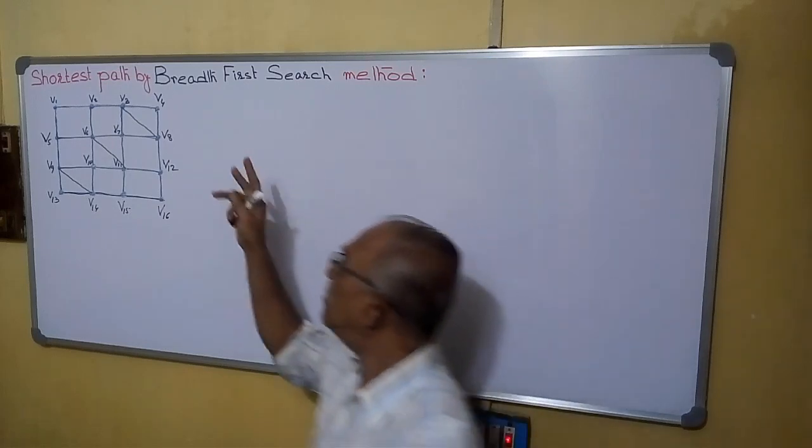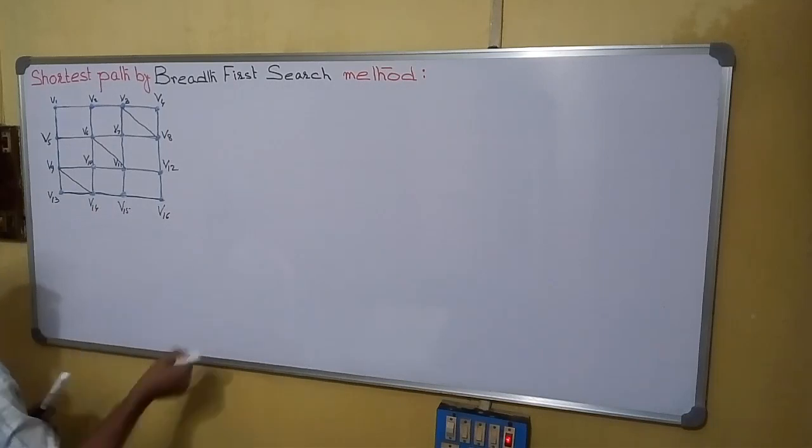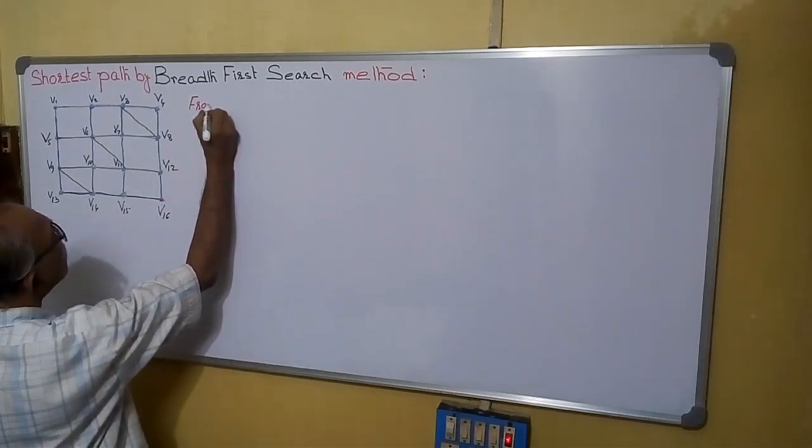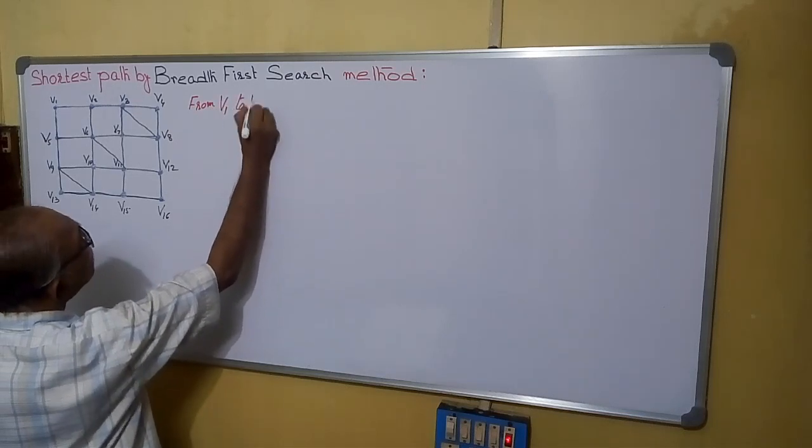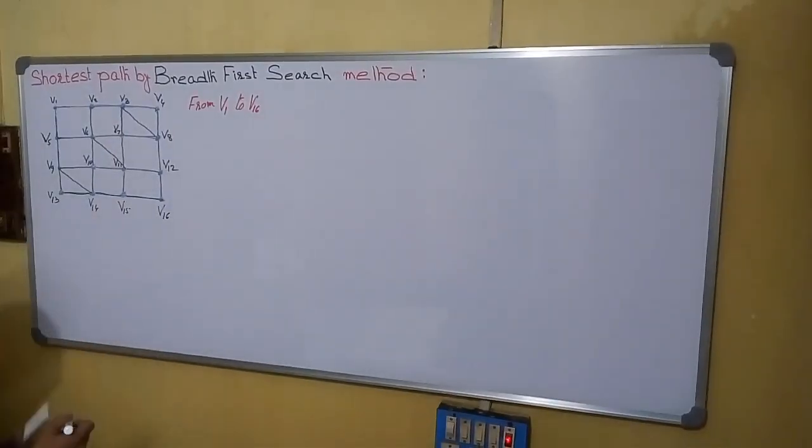That is Breadth First Search method. Let us assume that we have to find from V1 to V6. This is a randomly drawn graph. I have drawn it.